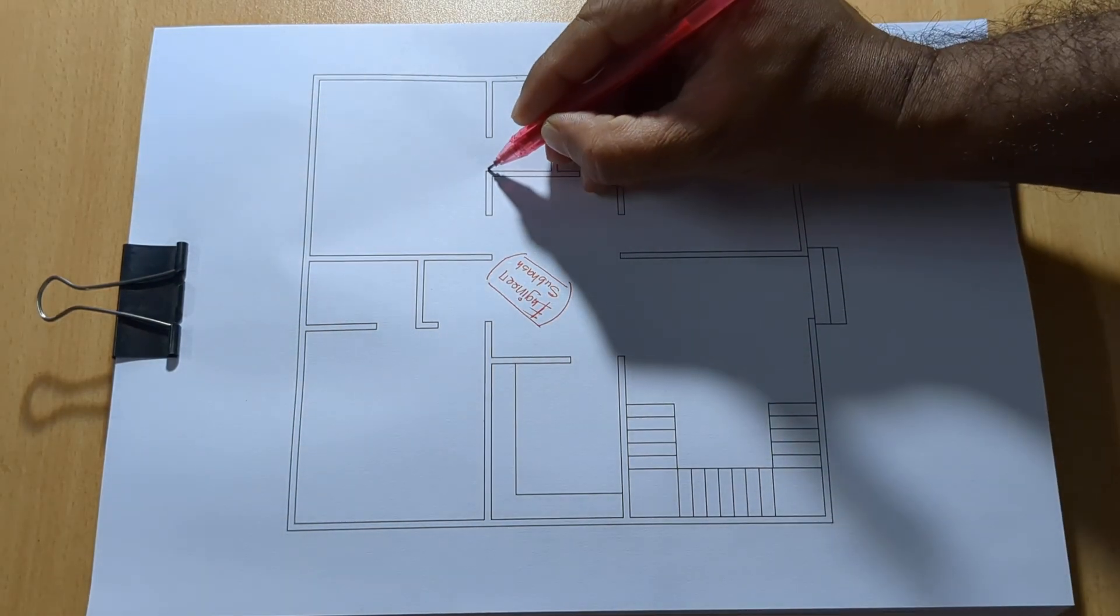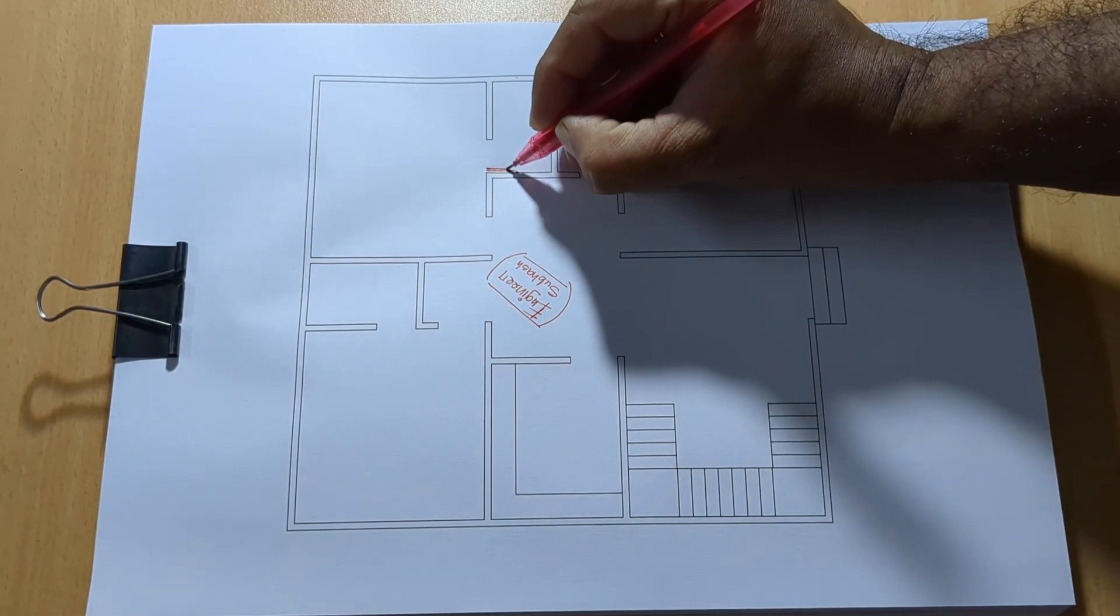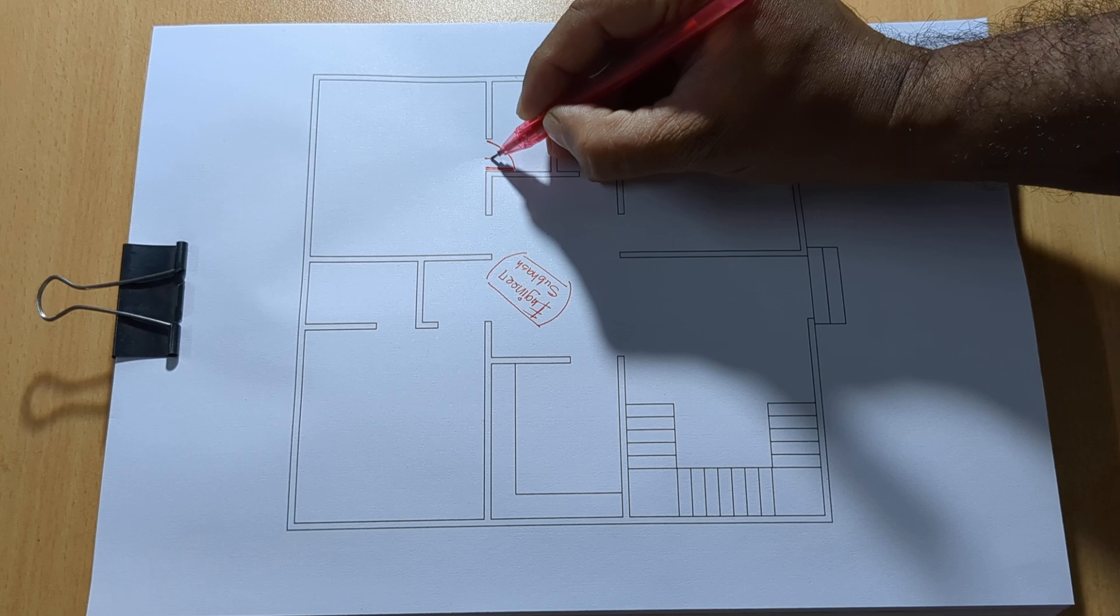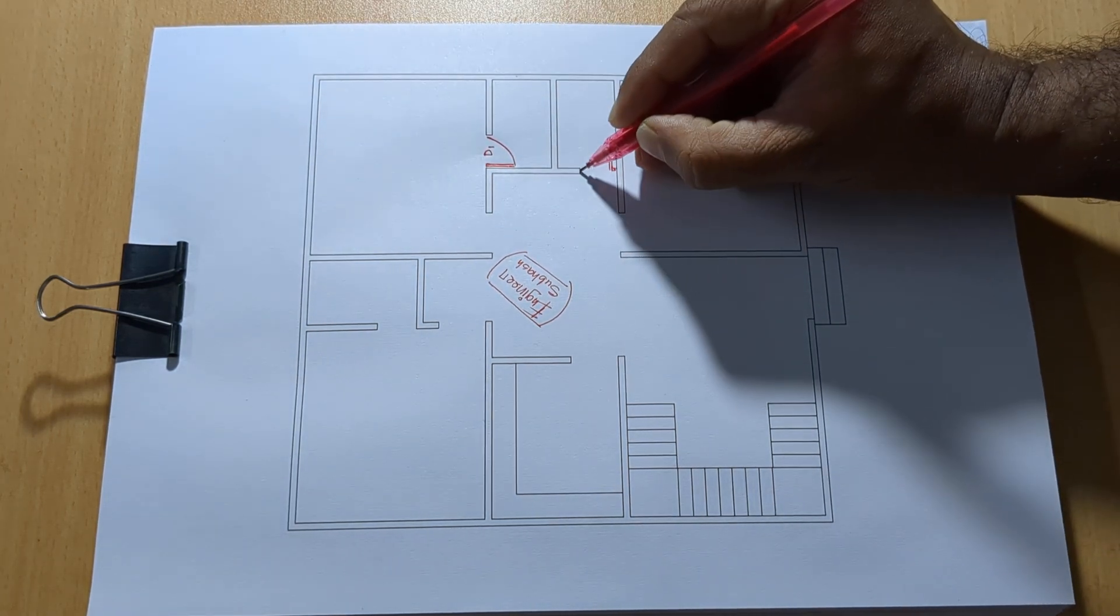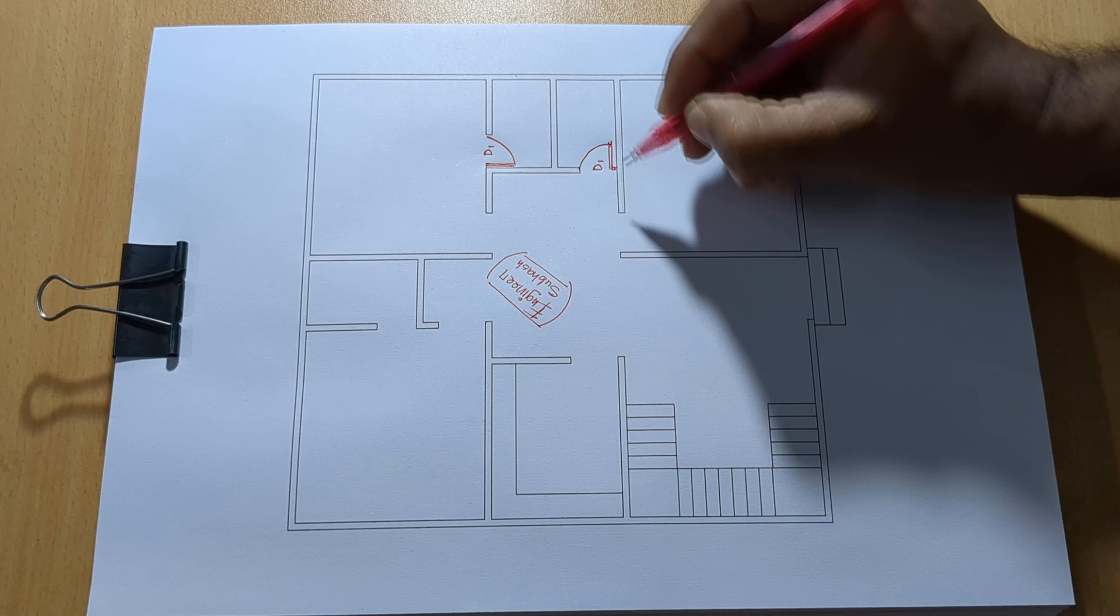3BHK house plan design. First D1, common bathroom latrine D1.